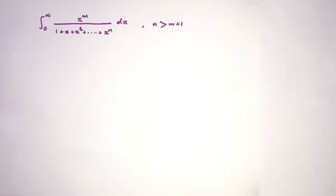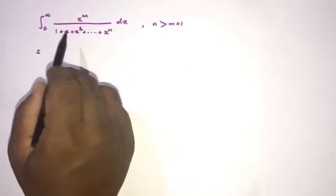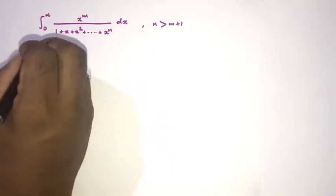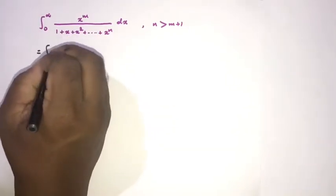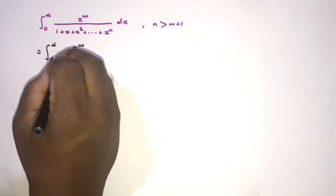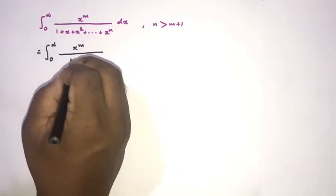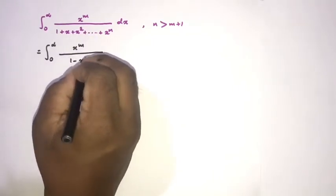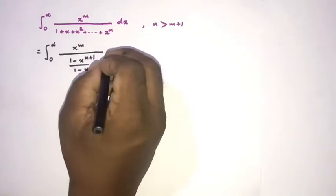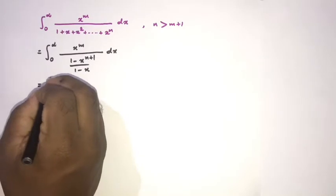We know that in the denominator we have the geometric series, and we know the sum of the geometric series. So we can write the integral from 0 to infinity of x to the M over — which equals 1 minus x to the N+1 over 1 minus x — dx.